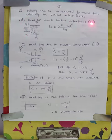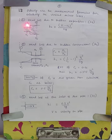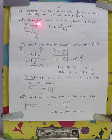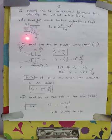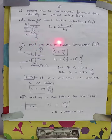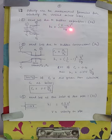Number one: head loss due to sudden expansion, h subscript e. Suppose this is the small pipe — section one — and section two is of the bigger pipe. After this small pipe, there is a fitting of a big pipe. When the fluid enters from this pipe to this pipe, there will be sudden expansion. Suppose in the small pipe the velocity of fluid is V1, and in the bigger pipe the velocity of fluid is V2. Then we can calculate the head loss due to sudden expansion as: h_e = (V1 − V2)² / 2g, where g is the acceleration due to gravity.